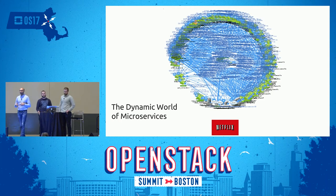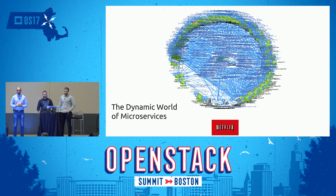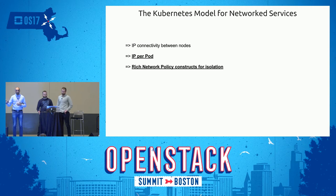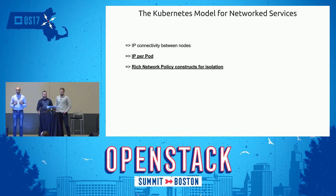As we move to microservices, that overlay approach starts to break down. Looking at large microservices deployments — this is a picture from Netflix from a few years ago — the concept of creating overlays for individual application instances that need to communicate does not scale from a networking perspective. Container orchestrators like Kubernetes have taken a fundamentally different approach: assuming an IP per pod, with communication between pods over IP, and those IP addresses unique within the cluster. The fundamental assumption is: the world is IP.